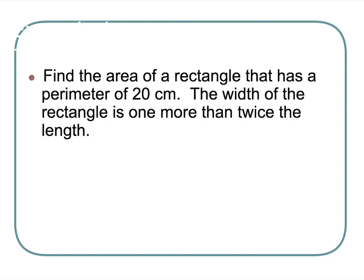All righty, as is tradition with this class, we aren't going to ask you straight ahead area type questions. We're going to make it a little weird. Find the area of the rectangle that has a perimeter of 20 centimeters, and the width of the rectangle is one more than twice the length. Oh my goodness. That is crazy. All right. So what are we going to do here? Well, I know the area is just length times width. Area equals length times width, right?